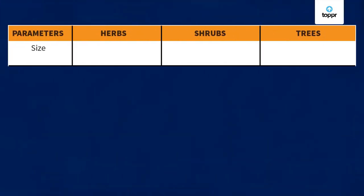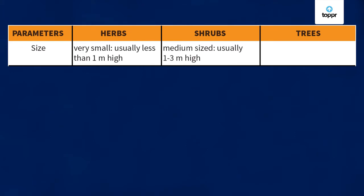We have divided the plants on the basis of size. Herbs are very small — their height is usually less than one meter. Shrubs are medium-sized, with a usual height of around one to three meters tall. Trees, of course, are pretty tall and are generally more than three meters tall.